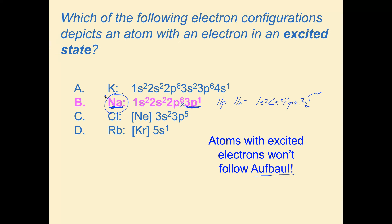That is a nice question combining ground state and excited state from week 3 with electron configuration from week 4. Not all test questions would be like this one, but it's a good, thoughtful question. You really need to know your stuff: understand ground state versus excited state, and connect it to the current material on electron configuration.